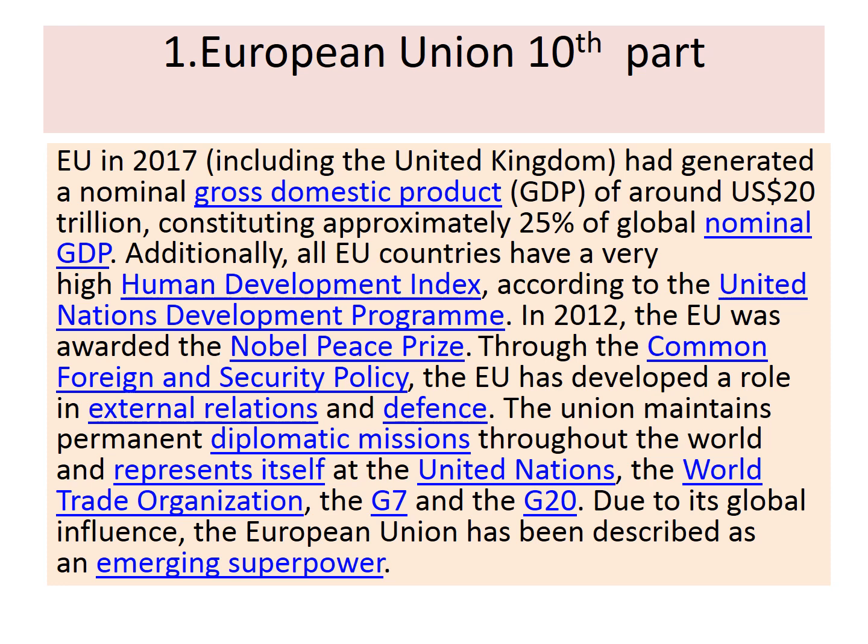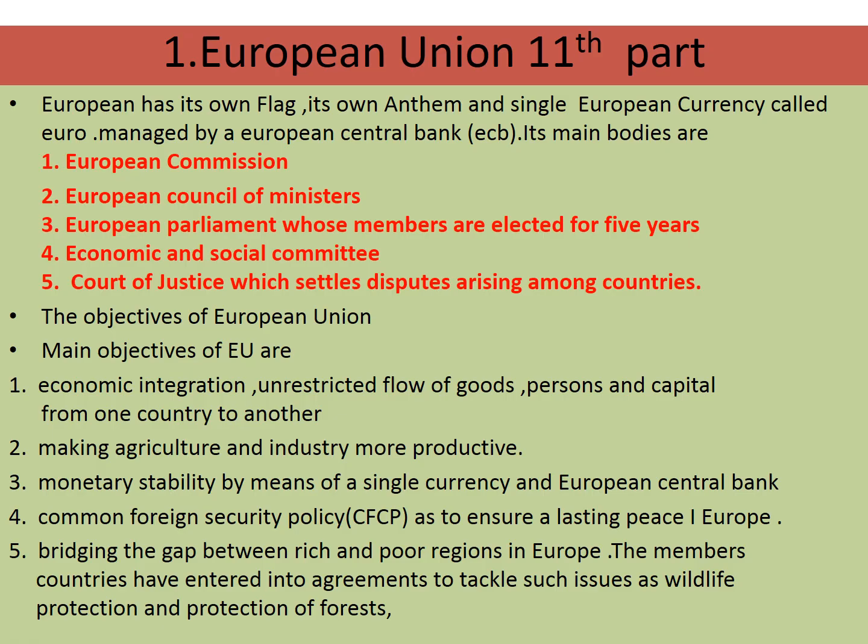According to the UN Development Program, in 2012 the European Union was awarded the Nobel Peace Prize. Through its common foreign and security policy, the EU has developed a role in external relations and defense. The EU maintains permanent diplomatic missions throughout the world and represents itself at the United Nations, the World Trade Organization, the G7 and the G20. Due to its global influence, the EU has been described as an emerging superpower, with stability maintained by means of a single currency and a European Central Bank.